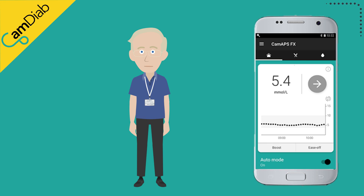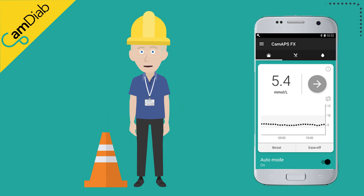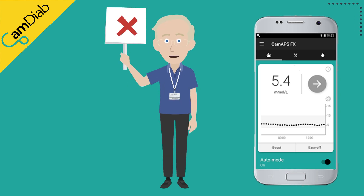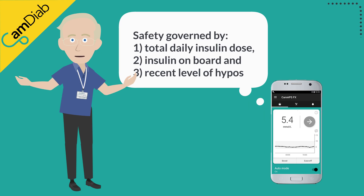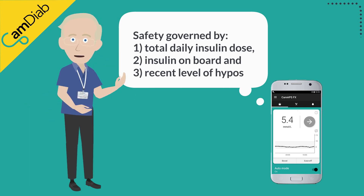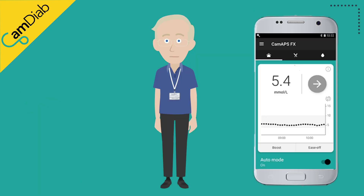Finally, there is one more important component which has a final say on CamAPS FX's insulin delivery: a safety layer. The safety layer uses a number of rules to reduce the risk of very high or very low glucose levels. These rules govern the maximum amount of insulin that can be delivered, and are based on the individual's total daily insulin dose and how much insulin has recently been delivered — insulin on board.